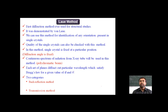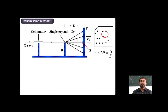The Laue method is the first diffraction method ever used for structural study, demonstrated by von Laue. It is used to identify any orientation present in a single crystal and to check crystal quality. In this method, the single crystal is fixed at a particular position and the diffraction angle is fixed. A continuous spectrum (polychromatic beam) from the X-ray tube is used. Each set of planes diffracts a particular wavelength satisfying Bragg's Law for given d and θ. The transmission method passes X-rays through the collimator and focuses them on the single crystal, producing diffraction patterns on a film.